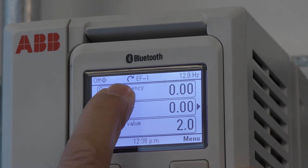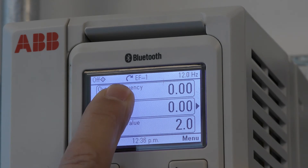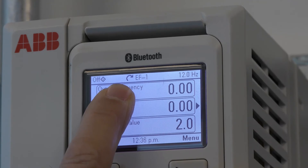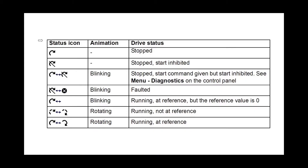Now I'd like to point out the status icon, which is a curved arrow. That tells you the status of the drive, the motor, and the direction of the reference frequency. When the curved arrow is sitting still and not blinking, it means the drive is stopped with no start signal. If there's a line through the curved arrow and it's not moving or blinking, it means the drive is stopped due to a start inhibit. When it's blinking between the curved arrow and the curved arrow with a line through it, it means the drive is stopped, the start command is given, but it is start inhibited.